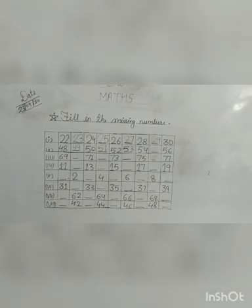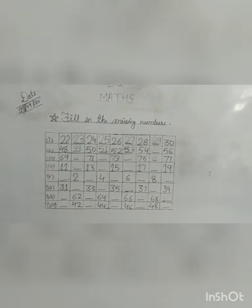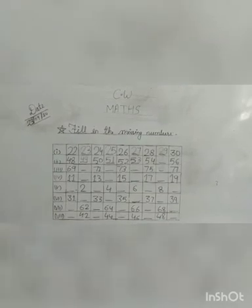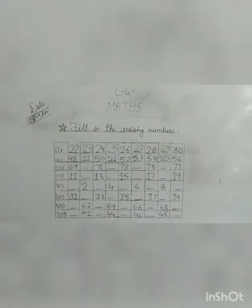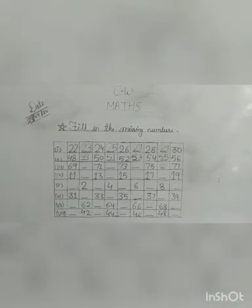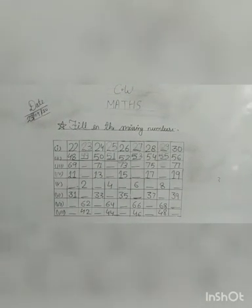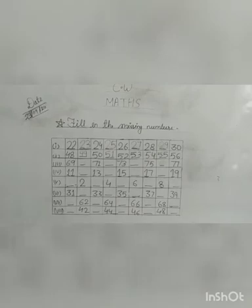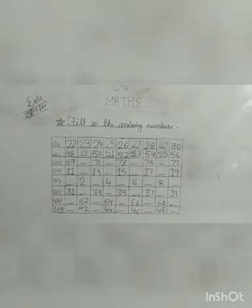Now 54 is already written here. After 54, write 55. You will write 55 here. So 56 is already written here. This line is also done.